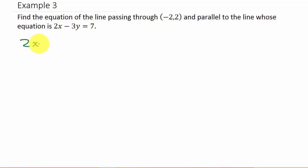So let's take 2x - 3y = 7 and we need to find the slope of the line. So hopefully you remember the slope intercept form of a line, y = mx + b.